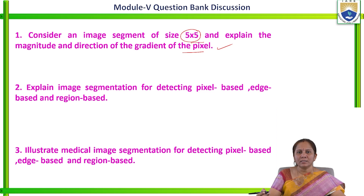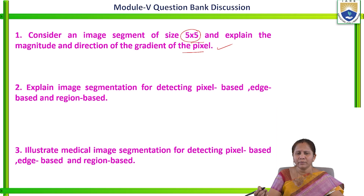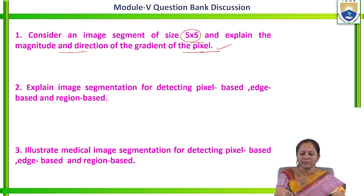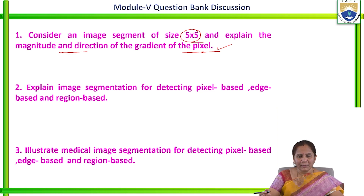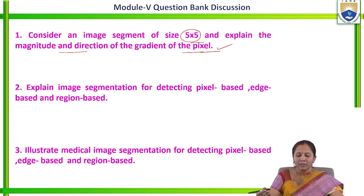To answer this, we have to consider different gradient operators such as the Sobel operator, Prewitt operator, and Roberts operator. First, we have to apply the convolution operation between the image and the selected operator. After performing the convolution operation, we calculate the gradients gx and gy, and then compute the magnitude and direction using the corresponding formulas.